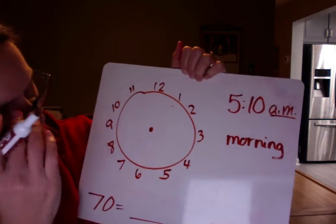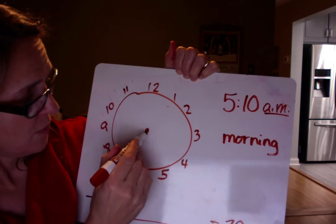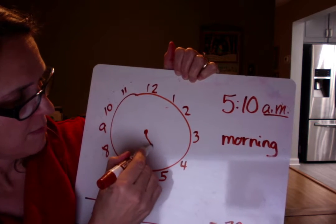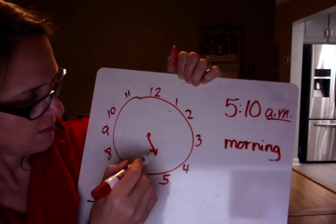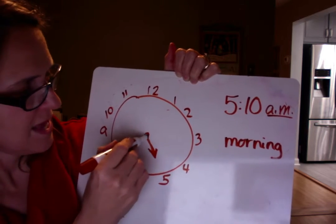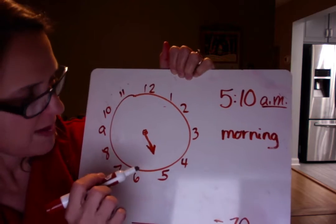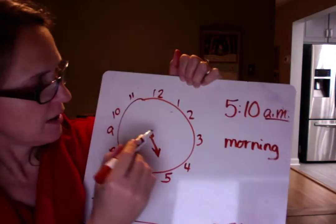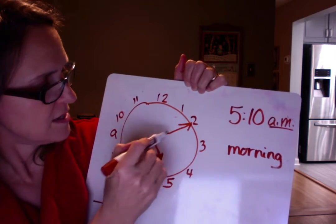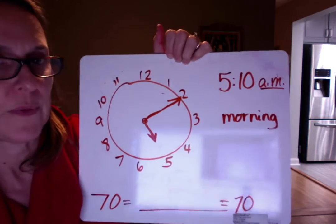So where does the five o'clock hour hand go? Well, it's a little bit past the five. Try to make that as straight as I can, right? And it's short because it's the hour hand. It's short and it's just a little bit past the five hour mark. And then the 10 minute mark is the minute hand and it's longer and it touches the two.